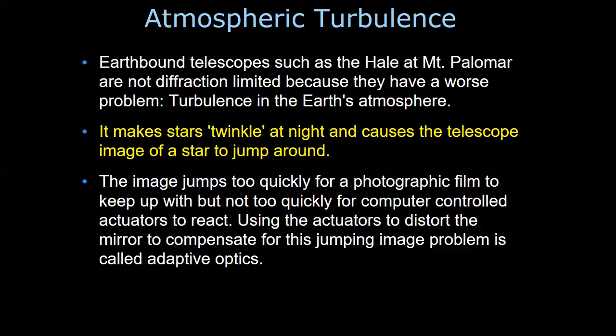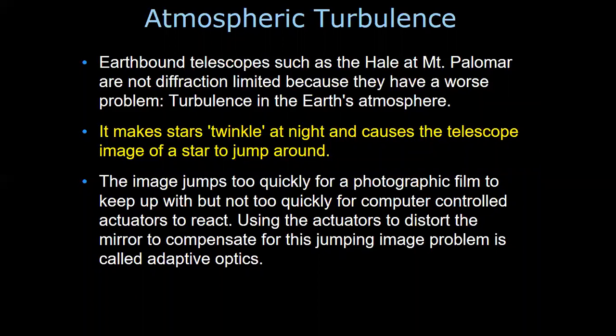The main reason for space telescopes is atmospheric turbulence. Earth-bounded telescopes — telescopes on the ground — are not diffraction limited because they have a worse problem: turbulence in Earth's atmosphere. This makes stars twinkle at night and causes the telescope's image of a star to jump around.